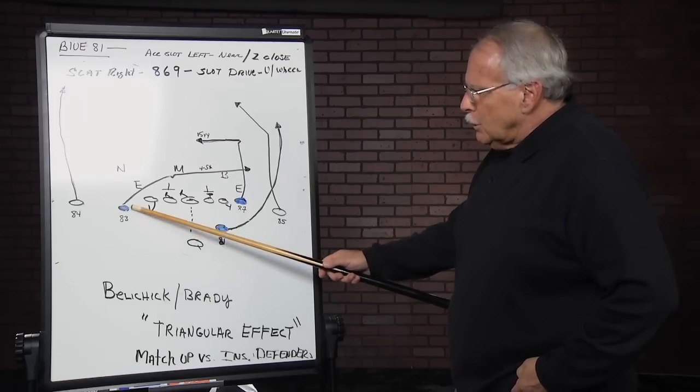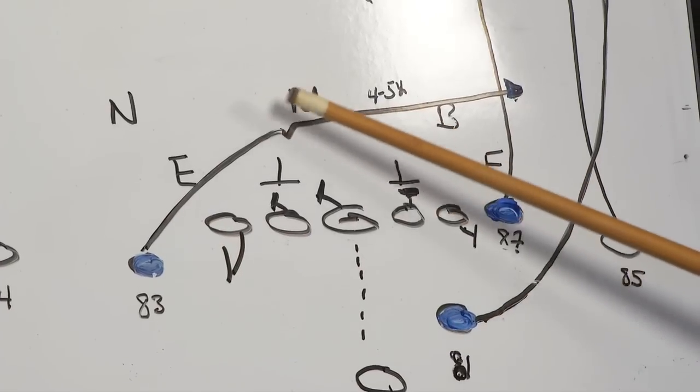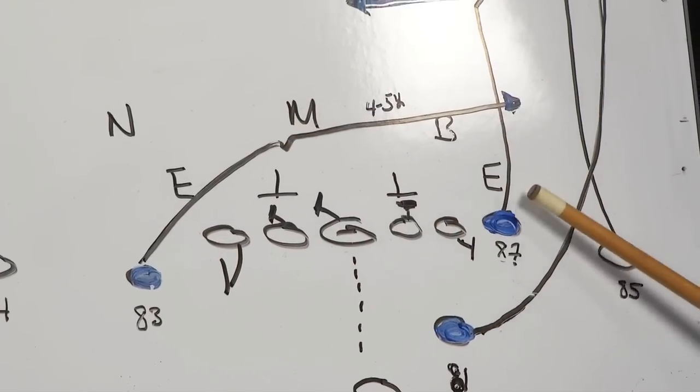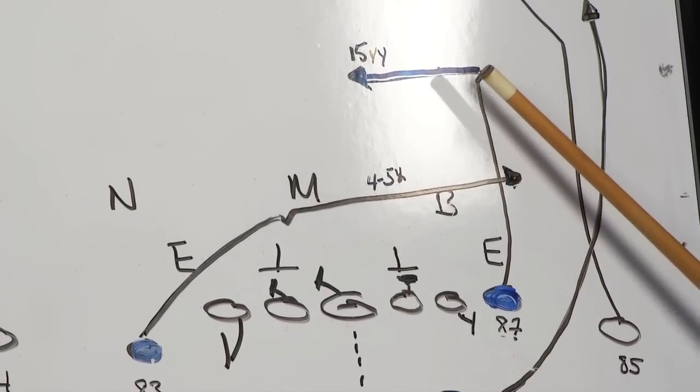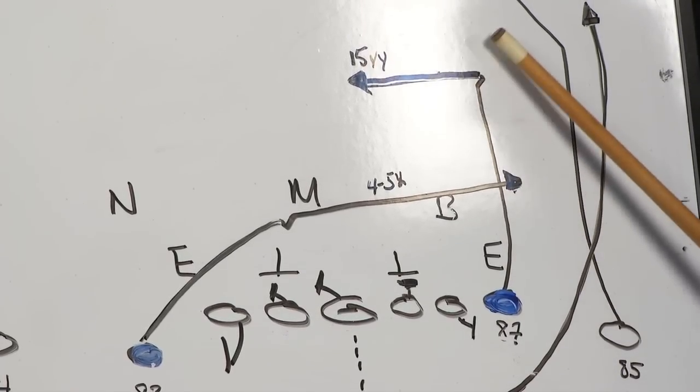Obviously Welker, great slot, great inside option runner, Gronkowski, classic tight end with speed to run second levels, corners.